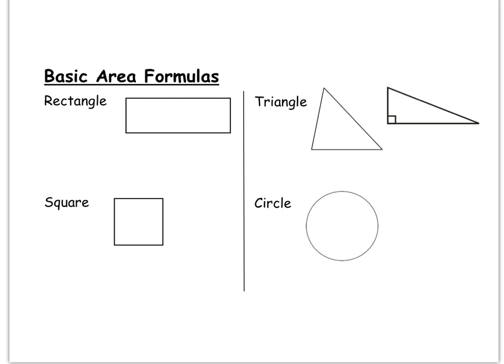Let's discuss the area formulas for some basic shapes. We'll begin with the rectangle. A rectangle is a four-sided shape with four right angles, and its opposite sides are congruent. To find the area of a rectangle, you simply just need to know its two dimensions — the length and the width, or what we'll call the base B and the height H. To find the total number of square units that fit inside, you simply multiply the base and the height together. One important thing to realize is that base and height meet at 90 degrees — that's actually an important part of what makes that shortcut work.